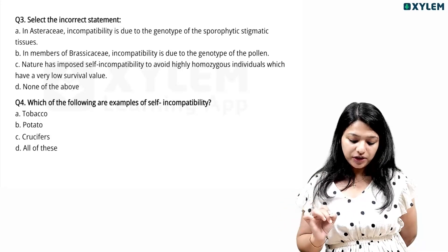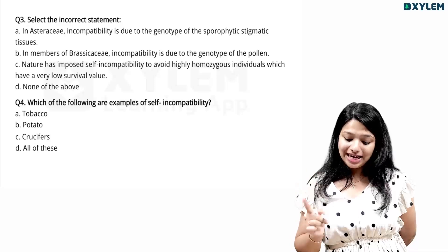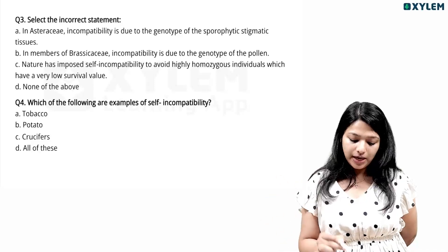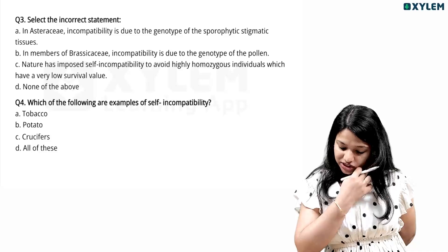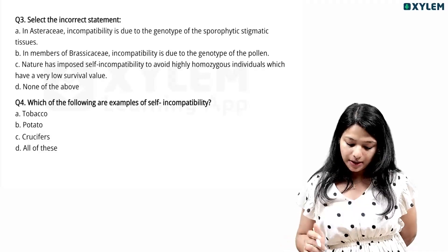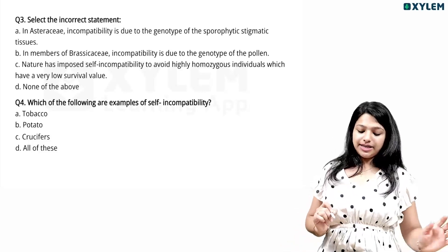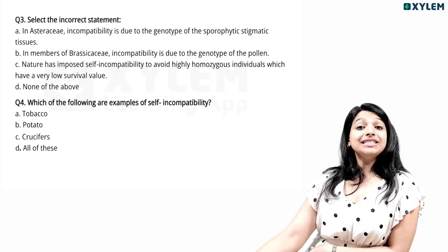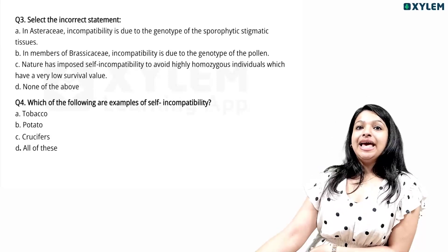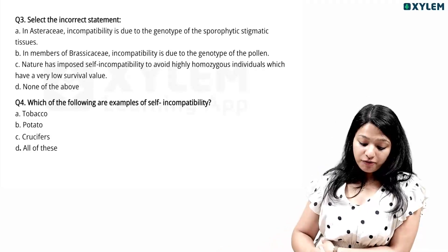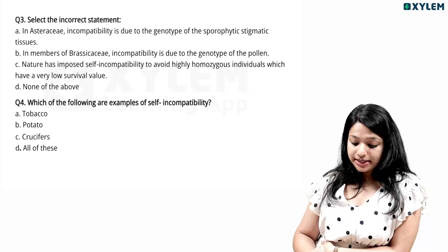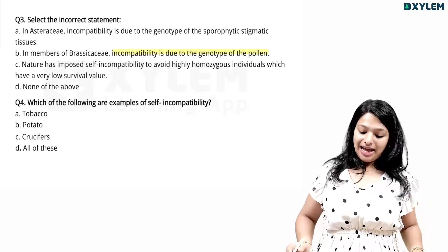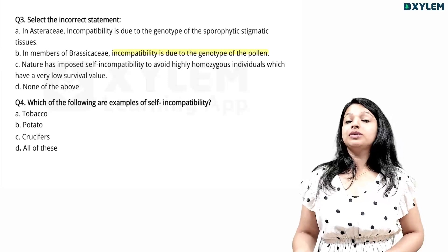Nature has imposed self-incompatibility to avoid highly homozygous individuals which have a very low survival value — none of the above. Select the incorrect statement. The option is that members of Brassicaceae — incompatibility is due to the genotype of the pollen. That's not the genotype. We don't know the members of Brassicaceae incompatibility.